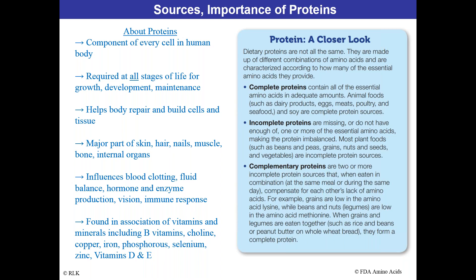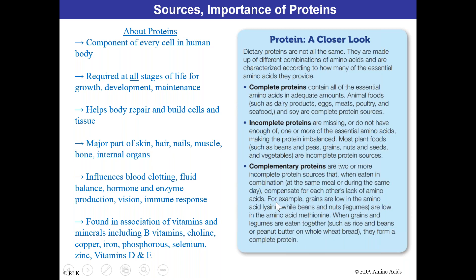This is why it's important to consume some meat. Those who opt for a diet that isn't meat or dairy friendly are going to have issues getting enough protein. It's about getting the proper amino acids. Incomplete proteins are missing or do not have enough of the essential amino acids. Complementary proteins are two or more incomplete protein sources that together compensate for each other's lack of amino acids.